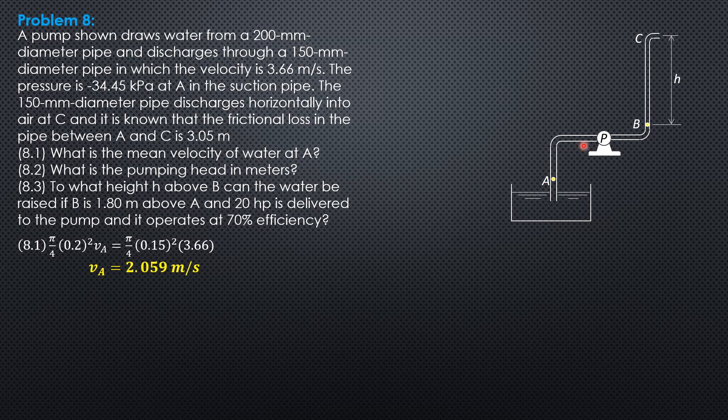The pump operates with an output power of efficiency times 20 horsepower and it is equal to weight flow rate Q times gamma of water pumping head divided by 746. If we express Q in cubic meter per second, gamma in newtons per cubic meter and of course pumping head meters.